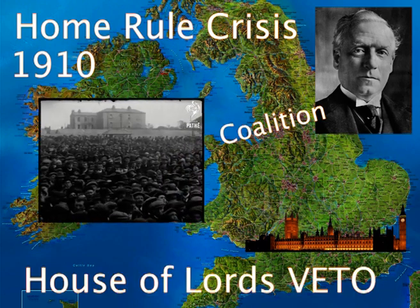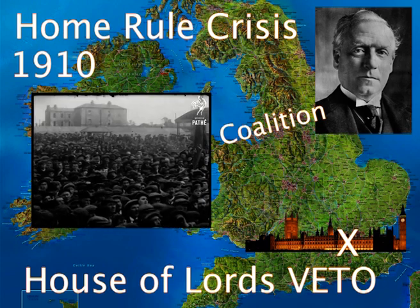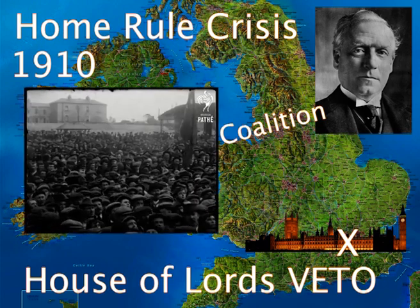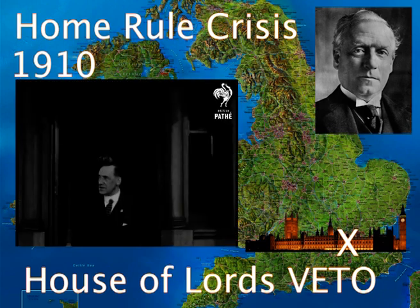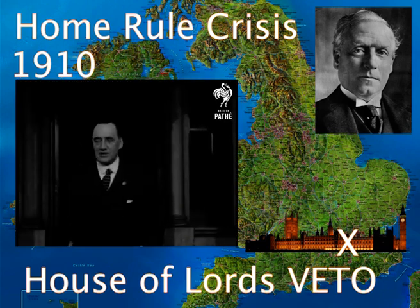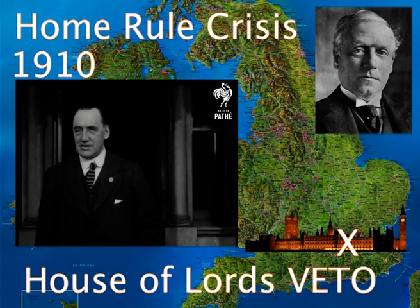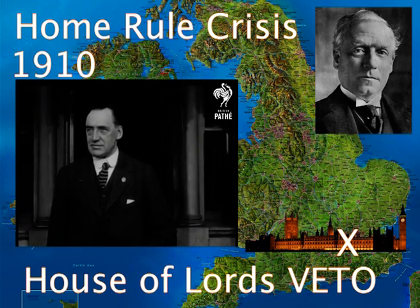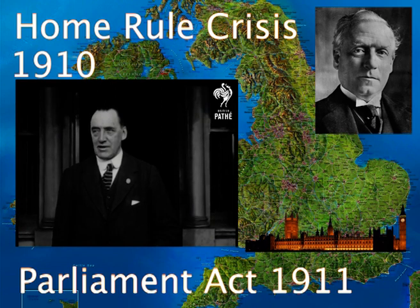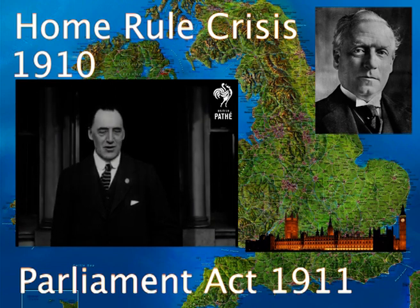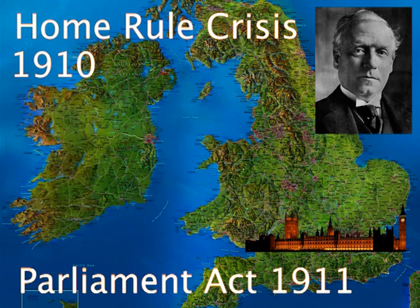Asquith agreed to this, but there was a problem of the House of Lords veto — the right of the House of Lords to reject bills passed by the House of Commons. The House of Lords were controlled by the Conservative Party at this time; they supported the Unionists in Ireland and were against granting Ireland Home Rule. In order to solve this problem, Asquith passed the Parliament Act of 1911, which meant that the House of Lords could only veto a bill twice, and after that it became law. This meant that Ireland would have Home Rule by 1914.